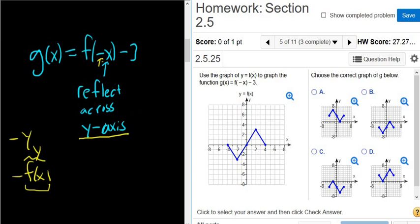So we're reflecting across the y-axis. And then this minus 3 means we're going down 3. So let's go to this picture here. So we're flipping this, we're reflecting it across the y-axis, and we're going down 3.